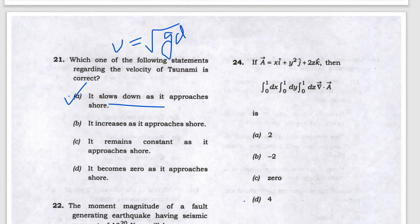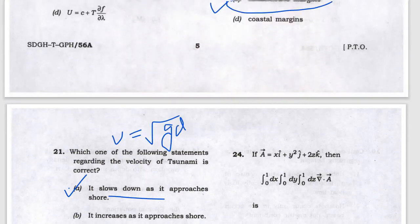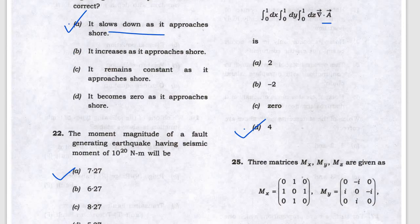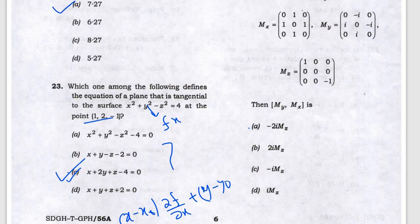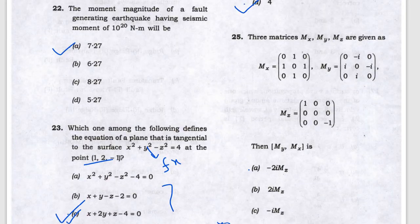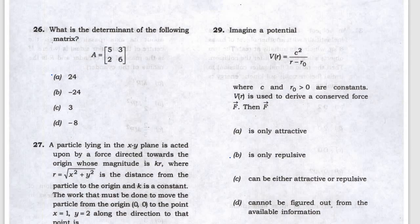Next, the answer is 4 — you just need to find the divergence, then integrate, and from the matrix you get answer A. And the determinant of the given matrix — the answer is A.